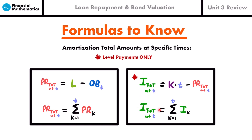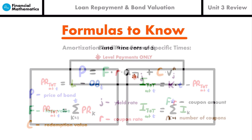You can also calculate total interest up to time T by simply summing I_1 + I_2 + I_3 up to the time you want. Those are the final formulas for regular amortization. Now let's move into bonds.